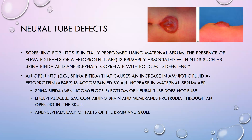Neural tube defects are another use for amniotic fluid. Screening for neural tube defects is initially performed using maternal serum — we draw blood from the mom, usually around 16 to 18 weeks gestation. The presence of elevated levels of alpha-fetoprotein, or AFP, is primarily associated with neural tube defects such as spina bifida and anencephaly, and these usually correlate with folic acid deficiency. Good nutrition and vitamin intake prior to and at the beginning of pregnancy is really important. An open neural tube defect such as spina bifida causes an increase in amniotic fluid AFP and is accompanied by an increase in maternal serum AFP.